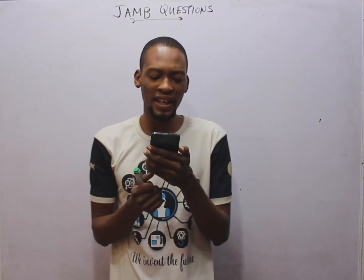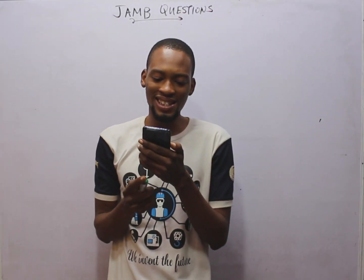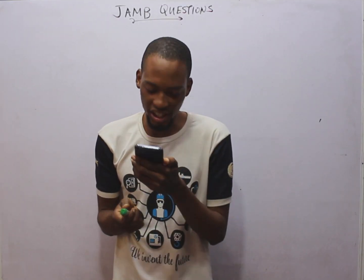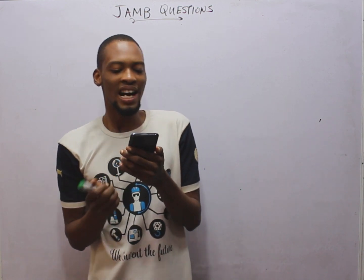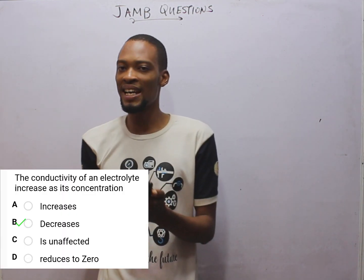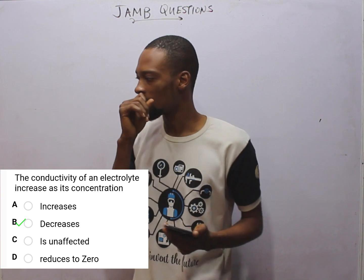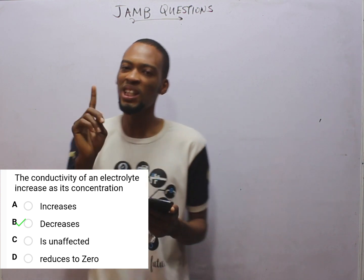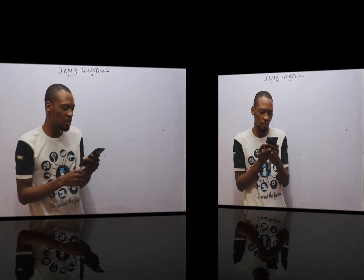The conductivity of an electrolyte increases as its concentration increases — take note of this. As concentration increases, conductivity actually reduces, like I explained earlier.